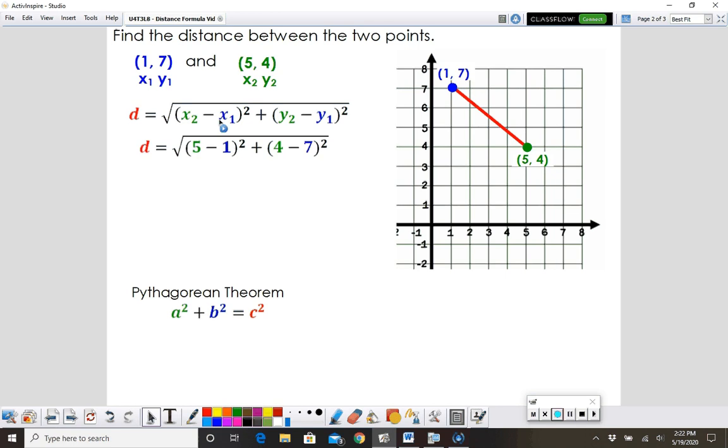I'm going to take these values and plug them into my formula. So 5 minus 1, so x2 minus x1, and then y2 minus y1 is 4 minus 7. So we're going to do 4 squared plus negative 3 squared. So 4 squared is 16, negative 3 squared is 9.